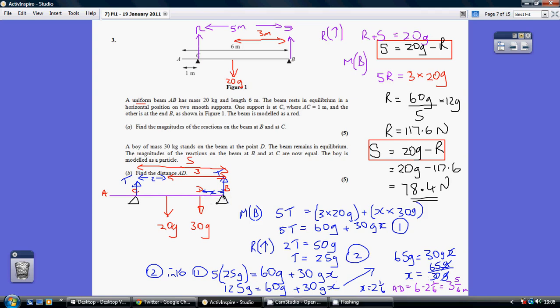I'm being asked to work out the distance from A to D. So that's the whole length, 6 less my 2 and a sixth, which is 3 and 5 sixth metres.